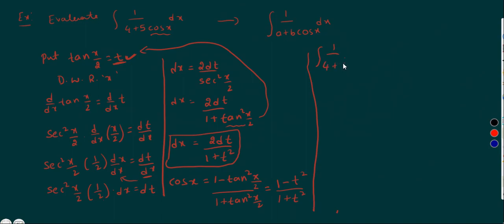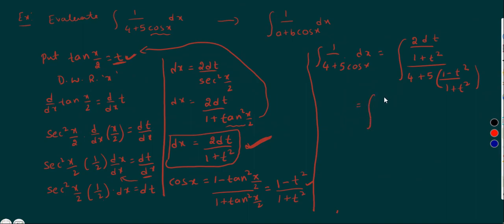Integration 1 by (4 plus 5 cos x) dx equals integration — dx means 2dt by (1 plus t square), and the denominator 4 plus 5 cos x, where cos x means (1 minus t square) by (1 plus t square). Taking LCM as (1 plus t square): 4 into (1 plus t square) plus 5 into (1 minus t square), all by (1 plus t square). The (1 plus t square) denominators cancel.